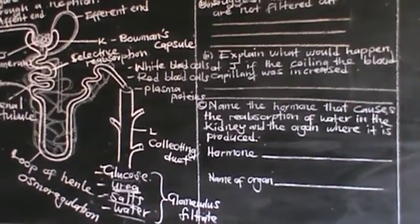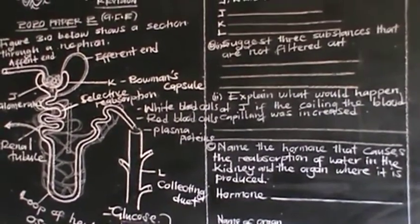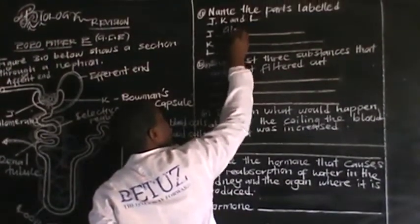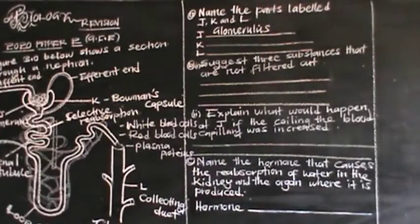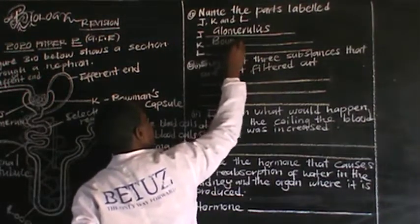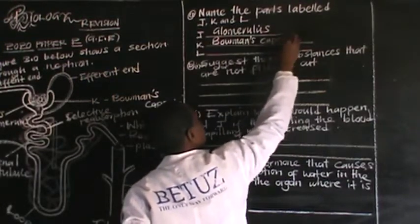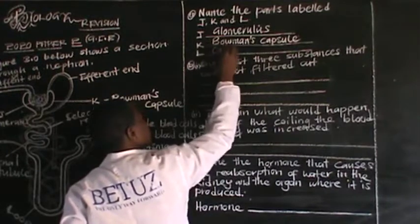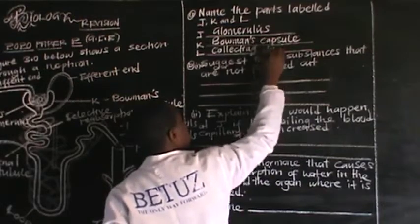Now let us look at the questions being asked. For part A, label the parts J, K, and L. J is our glomerulus. K represents the Bowman's capsule. L represents the collecting duct.